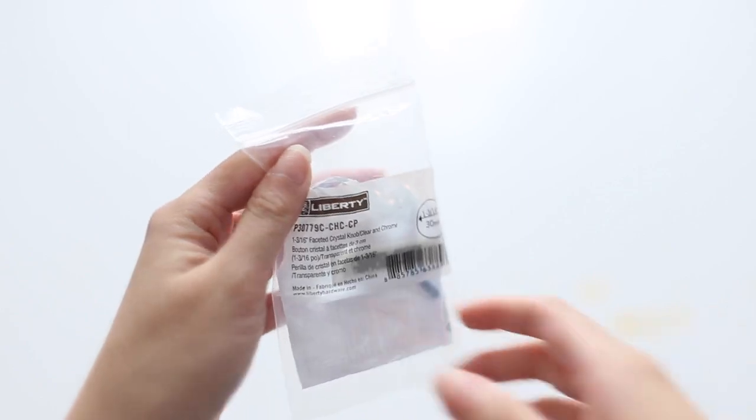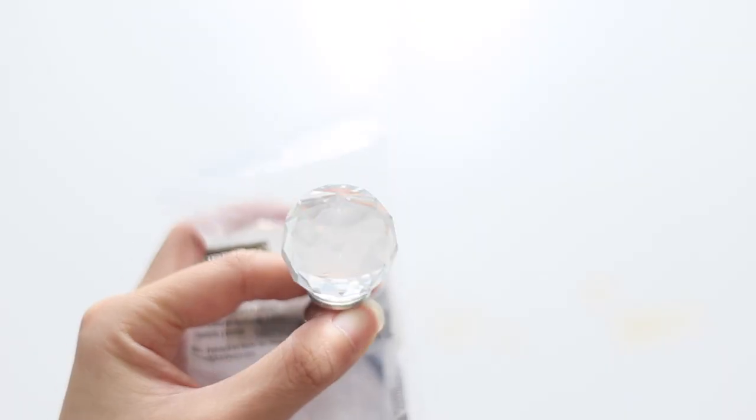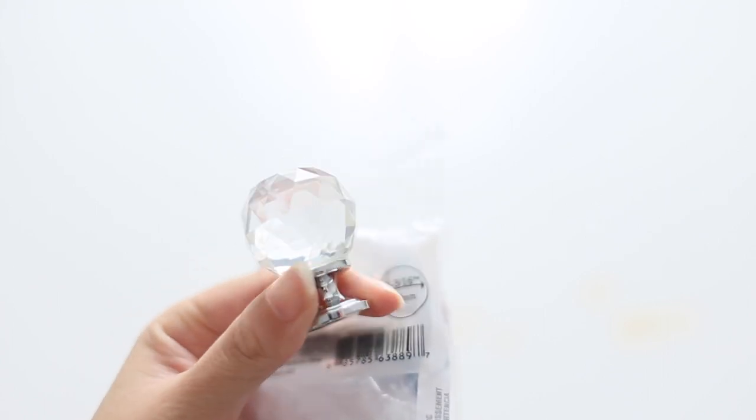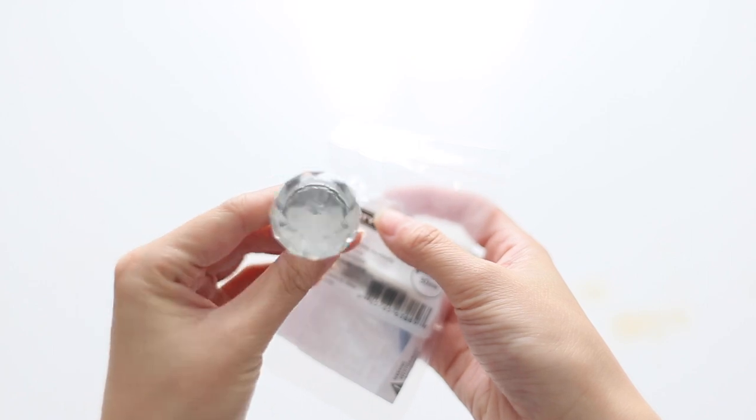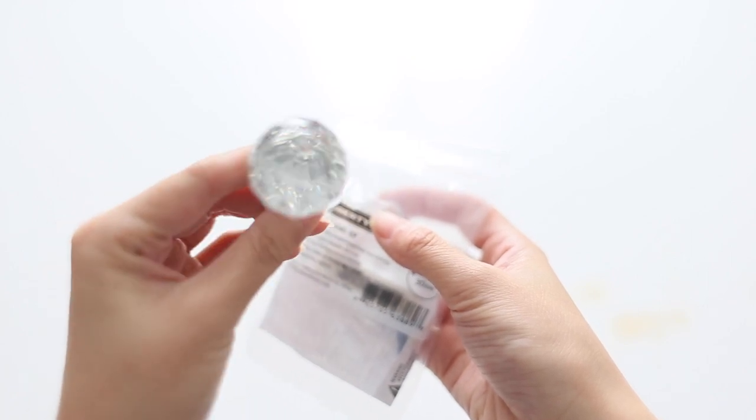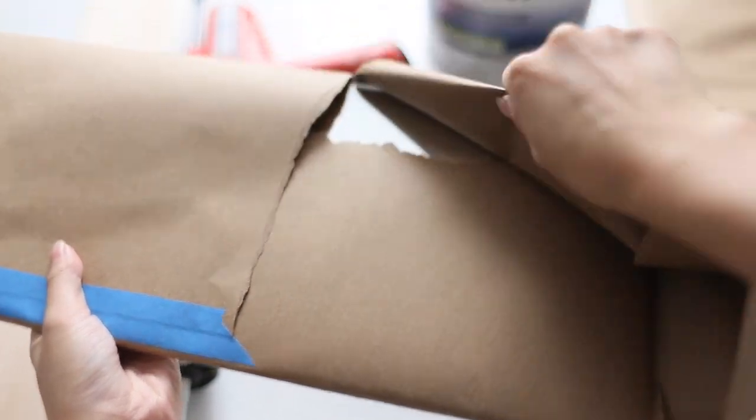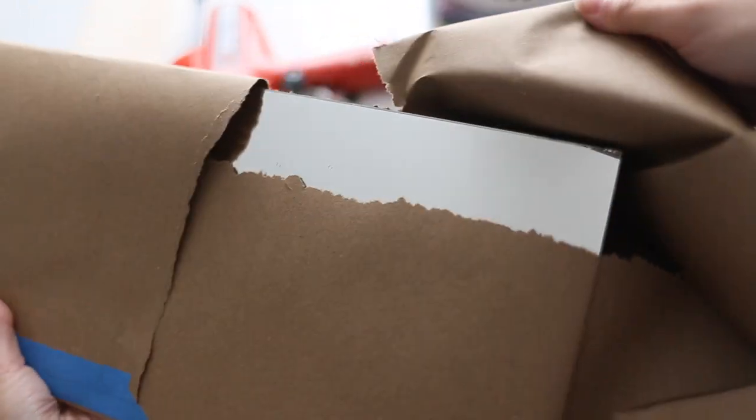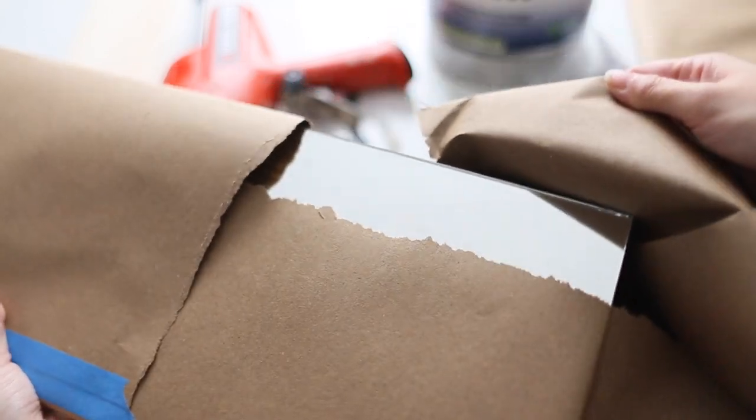Starting with materials, we're gonna go ahead and start with these knobs. I found these from Home Depot, and I just thought that it would really go well with the mirrored look that I have going on in this room. The mirrors, I got them custom cut. Lowe's actually custom cuts mirrors, and they sell them there, so I just went there, gave them the sizes, and they cut everything down for me.